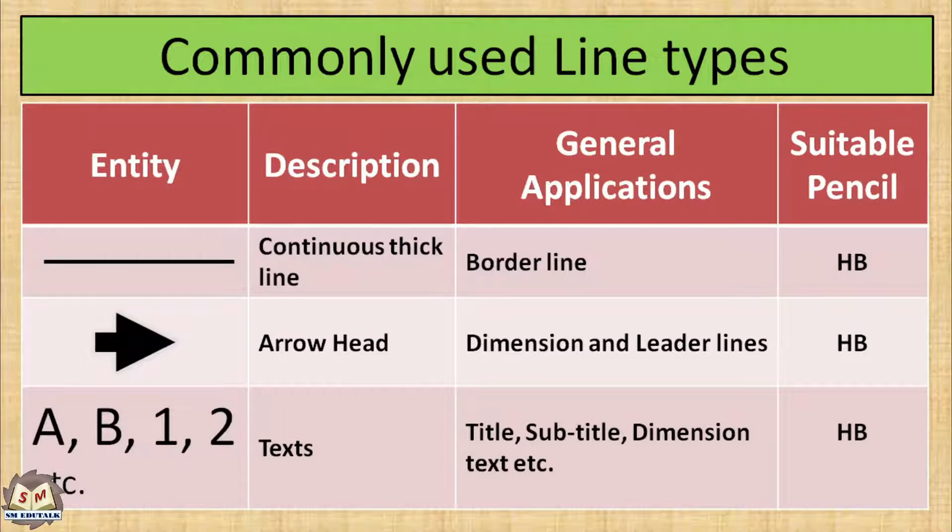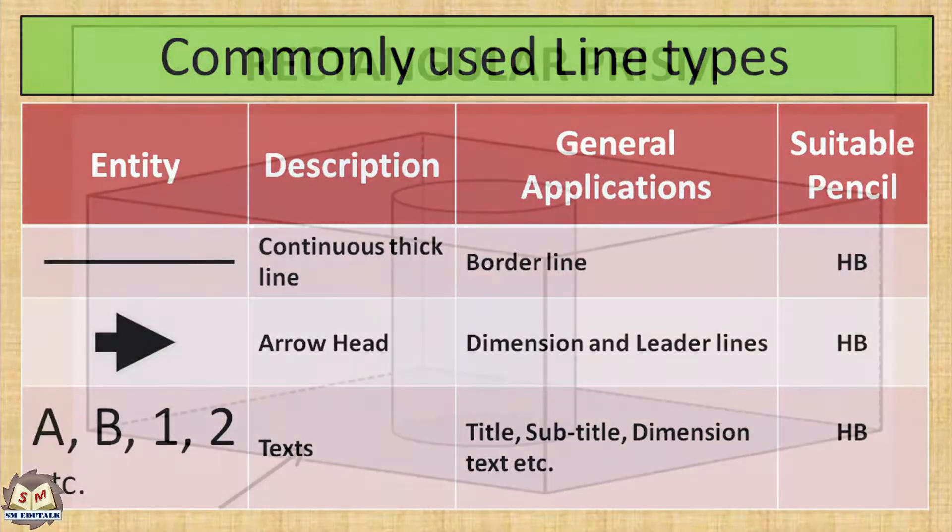Now let us see using HB pencil, what types of lines and other entities can be drawn. The very first line drawn in a drawing sheet is borderline. It should be drawn by using a continuous thick line with HB pencil. The arrowheads used in dimension line and leader lines are also drawn by HB pencil. In addition to that, HB pencil can be used for writing of titles, notes, dimensions, and other important particulars on a drawing.